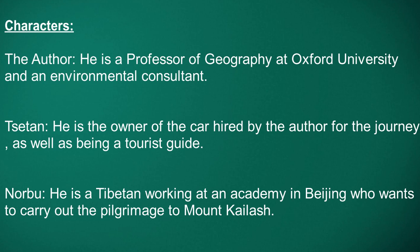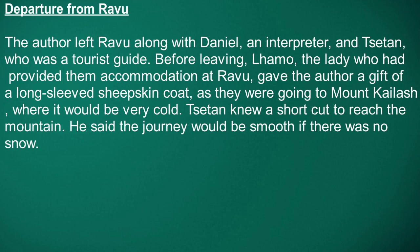Let us look at the prominent characters. The first is the author, who is a professor of geography at Oxford University and also an environmental consultant. The second prominent character is Setan, who is the owner of the car hired by the author for the journey, as well as being a tourist guide. The third character is Norbu, a Tibetan working at an academy in Beijing who wants to carry out the pilgrimage to Mount Kailash.